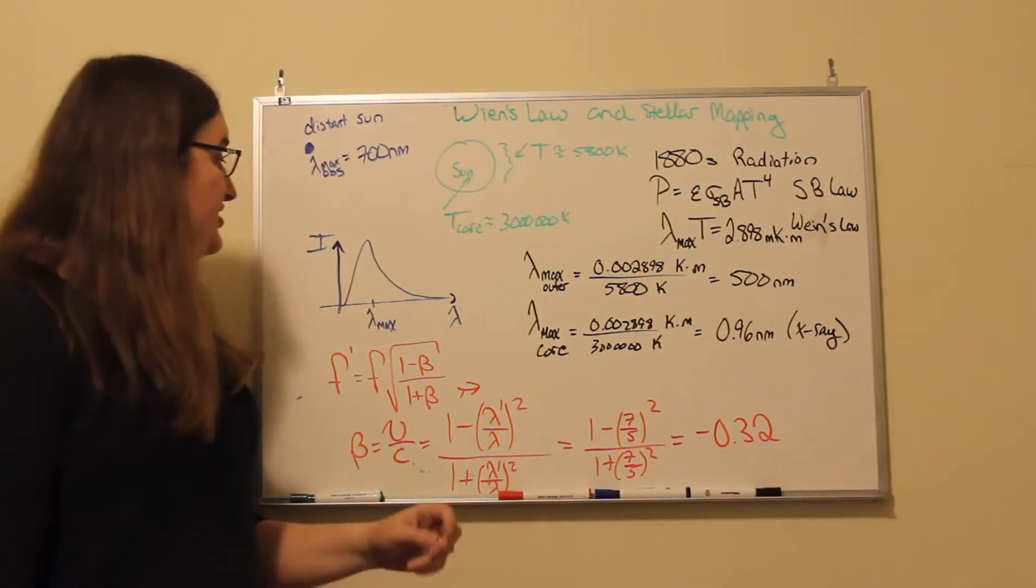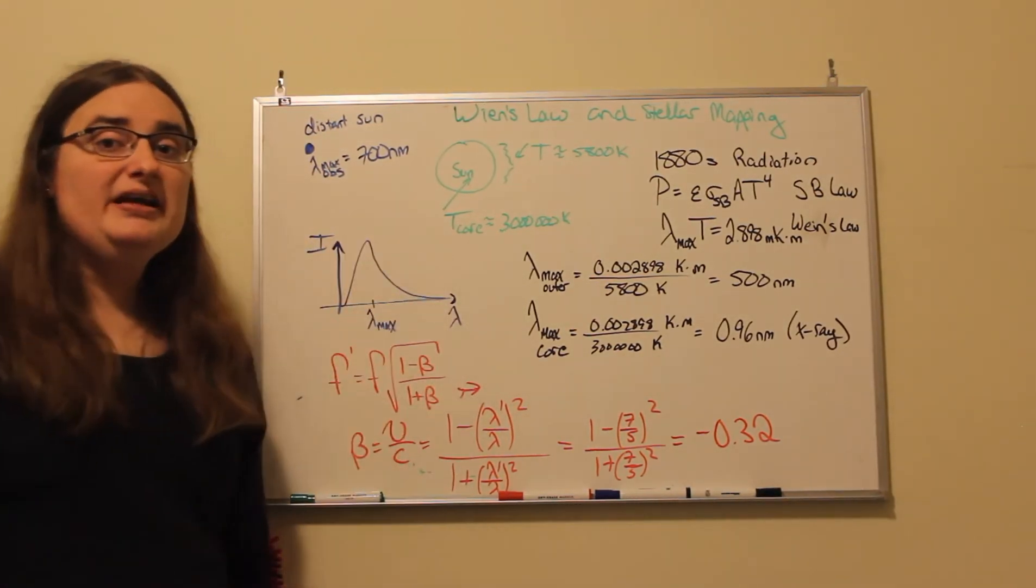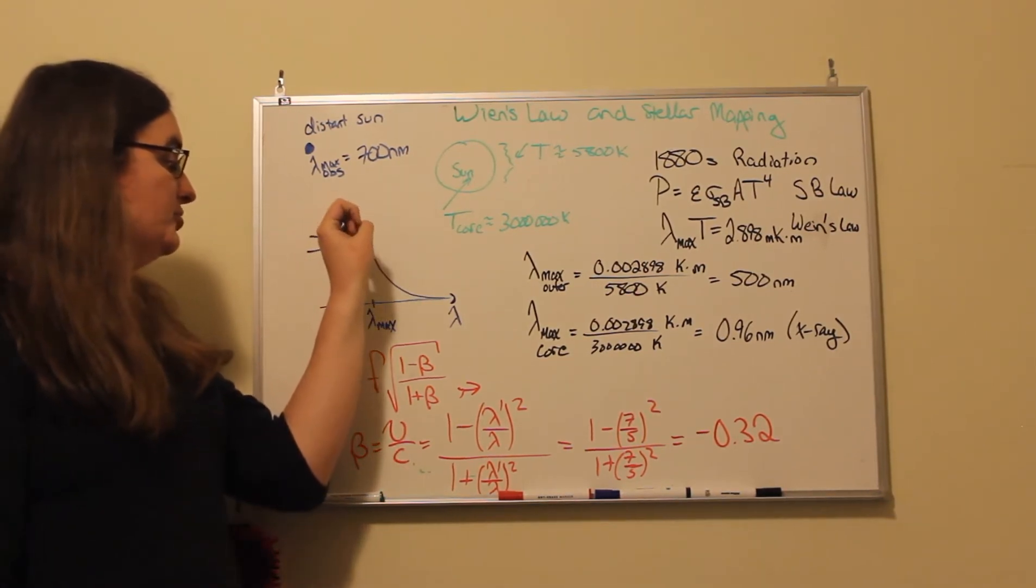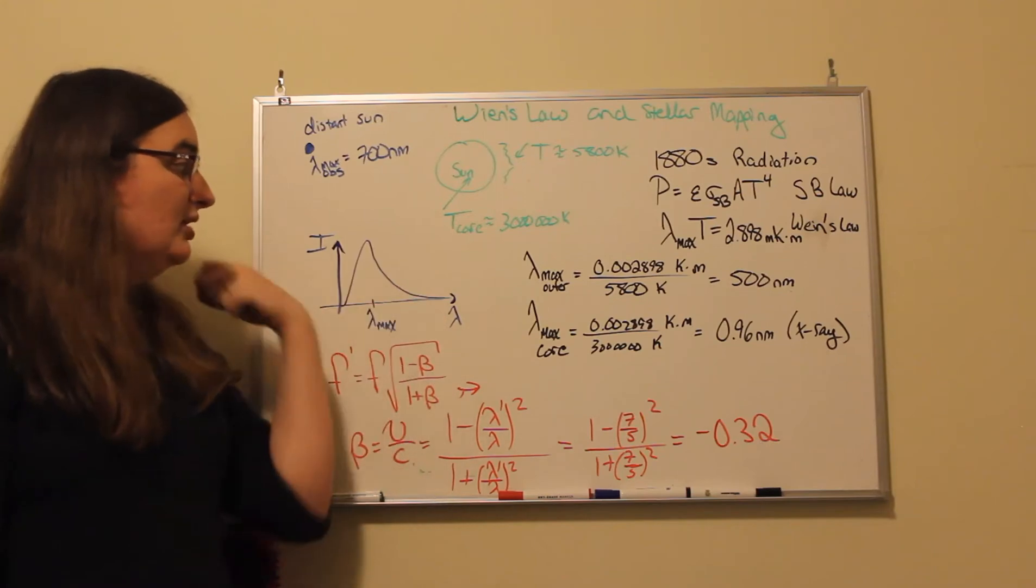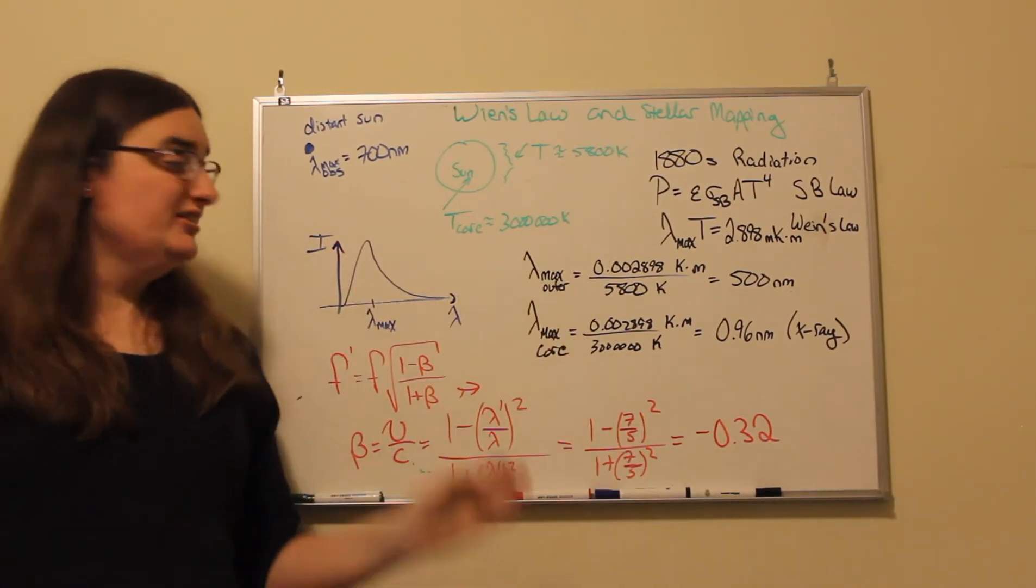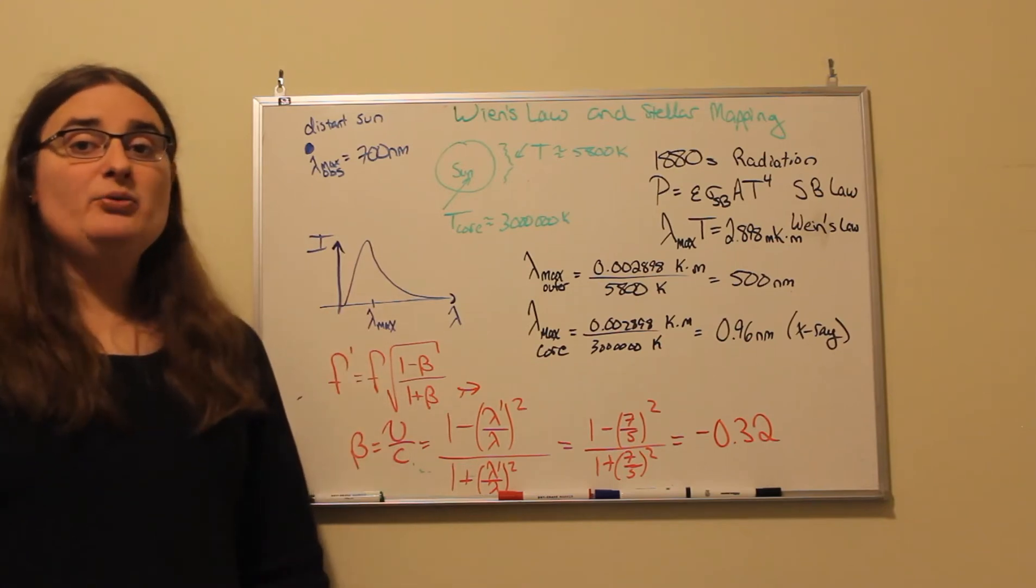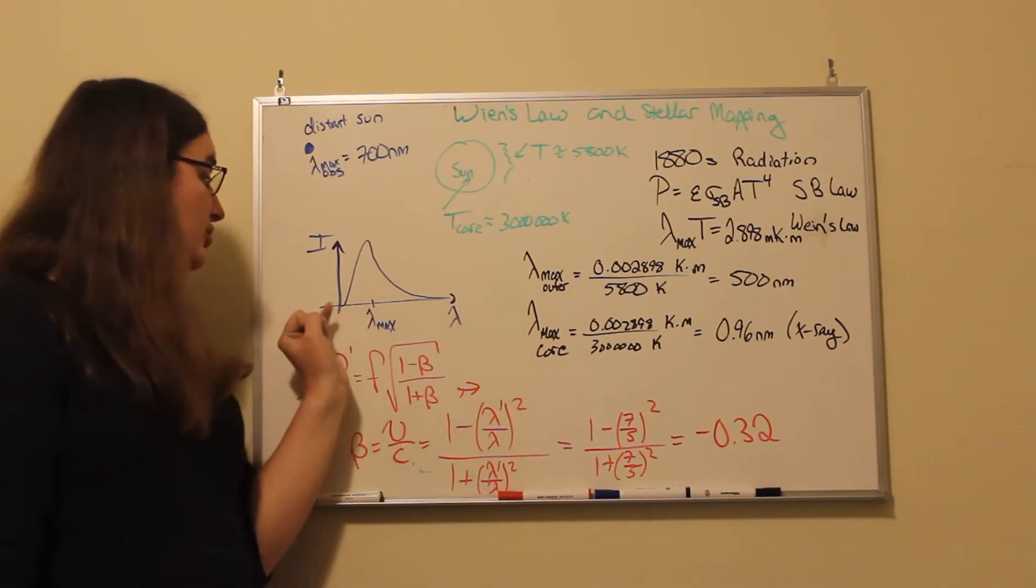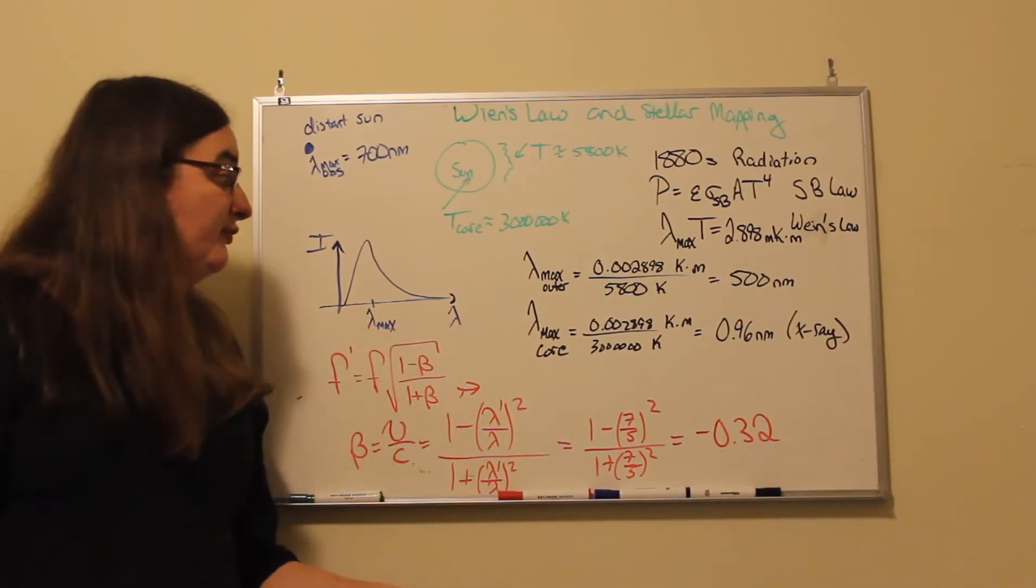So if you take a look at an intensity curve for light being given off by a black body object, you see it shoot up to a specific spike, what I'm calling lambda max, and then it drops back down to zero as we go up in wavelength. So high wavelength means low frequency, short wavelength means high frequency.